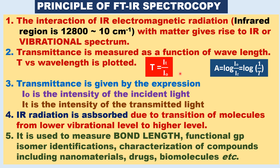In UV-visible spectroscopy, absorbance is plotted as a function of wavelength. The relation between absorbance and transmittance is: absorbance A equals log(I0/IT), which equals log(1/T).